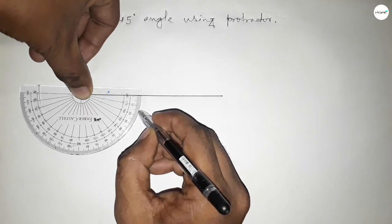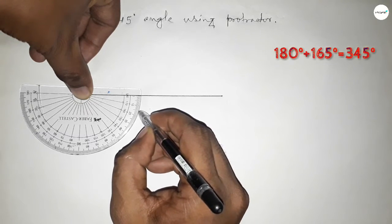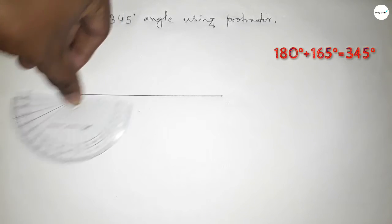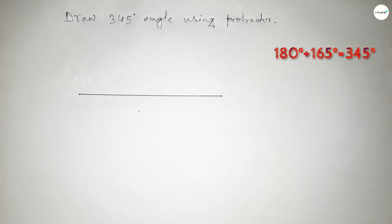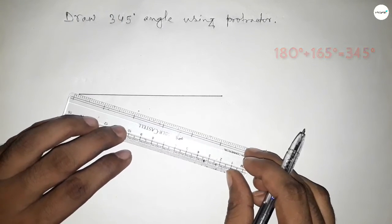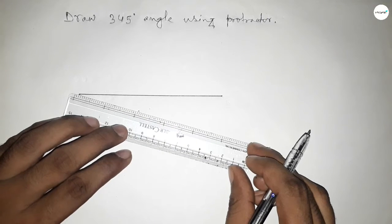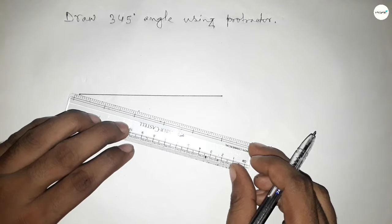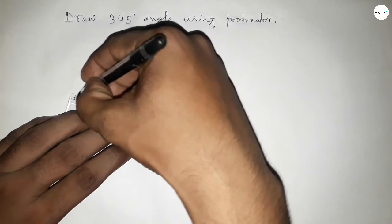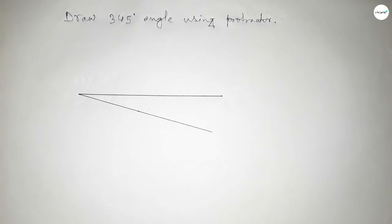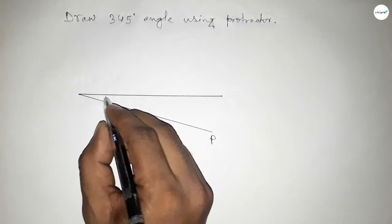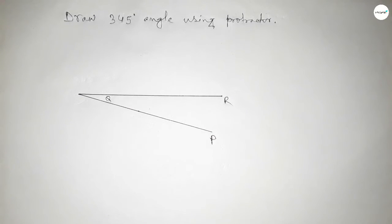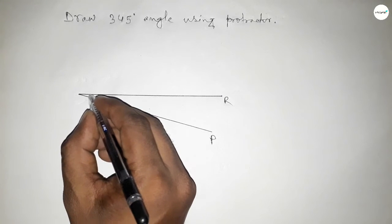So by adding 165 degree angle with 180 degree, then we can get 345 degree angle. Okay, now joining this to get 345 degree angle. So joining this, we got 345 degree angle and this is angle PQR.